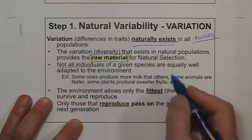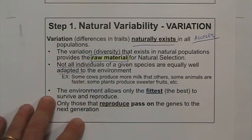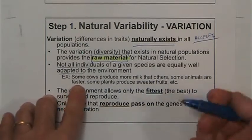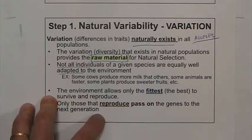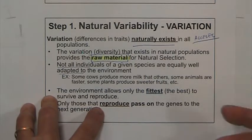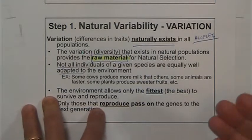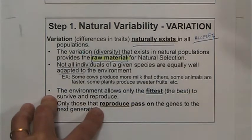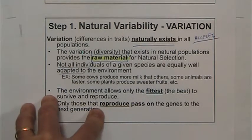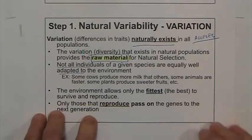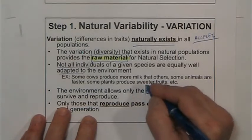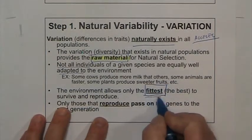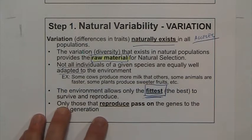Not all individuals are equally well adapted to the environment. If we think of things we are familiar with: some cows produce more milk, some animals are faster, some plants produce sweeter fruit, some plants produce more seeds than others, some are taller, some are shorter, some can tolerate harsh winters — others cannot — even within the same species. So the idea is that the environment allows only the fittest — basically, the one that has what it takes to survive under those conditions.